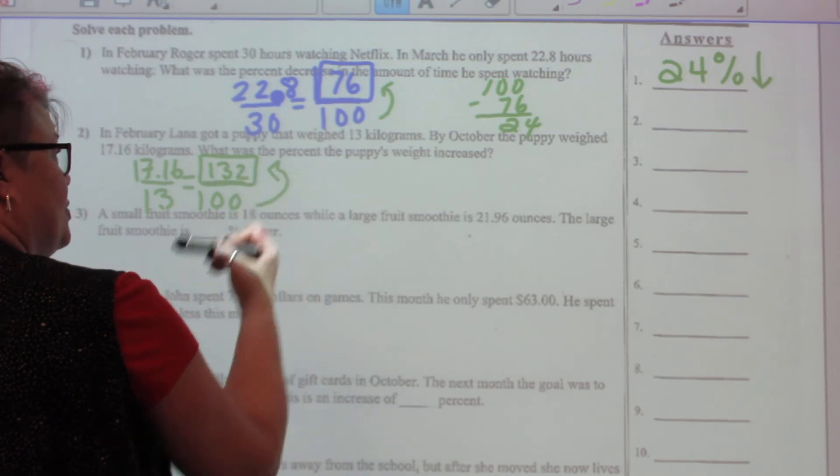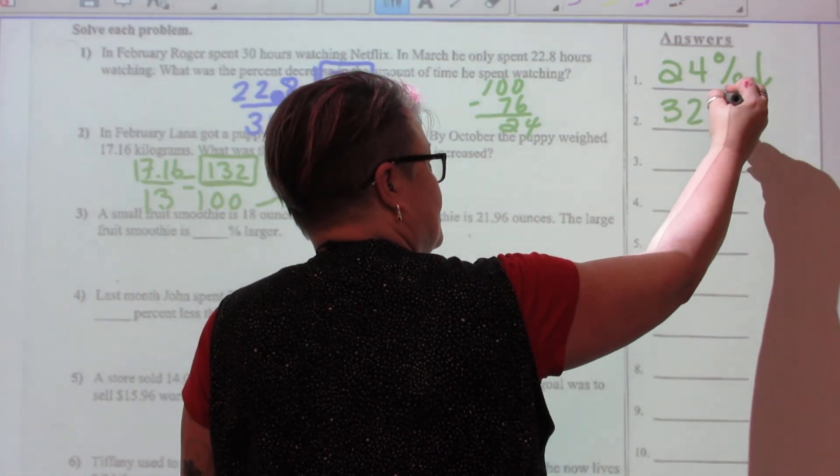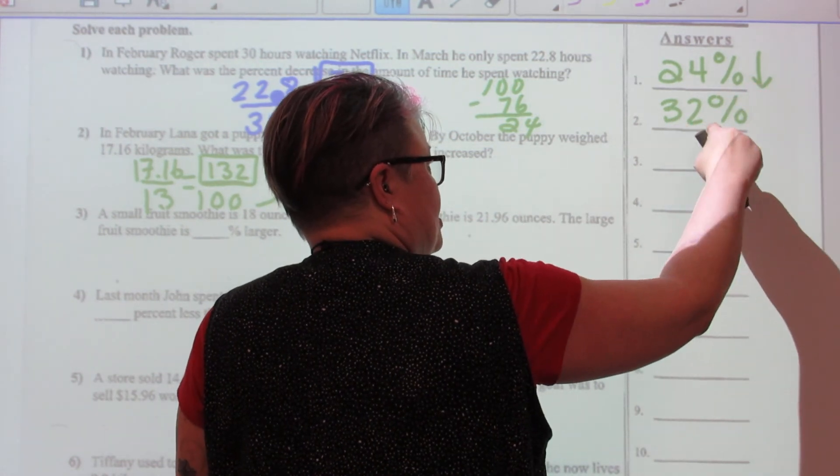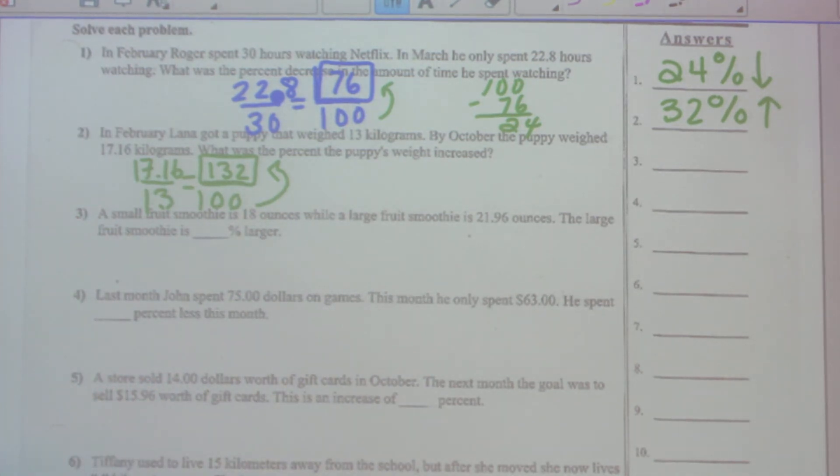The puppy's weight increase, if I go from 100 to 132, I have increased it by 32 percent. So I'm going to show that with 32 percent increase. I'm going to have a little arrow that points up to indicate that it was an increase in weight, not a decrease in weight.